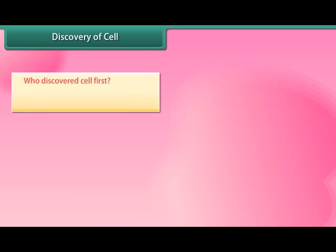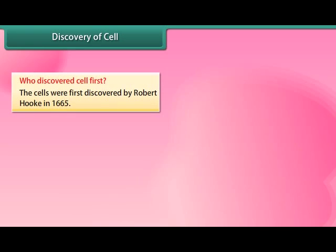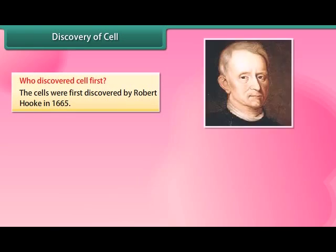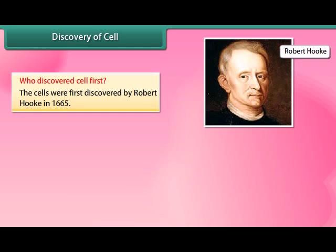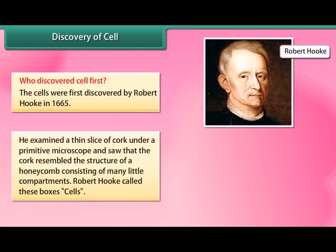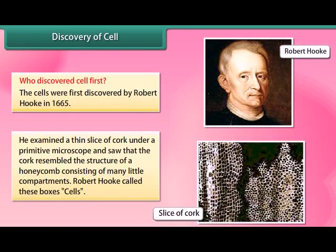Who discovered the cell first? Cells were first discovered by Robert Hooke in 1665. He examined a thin slice of cork under a primitive microscope and saw that it resembled the structure of a honeycomb consisting of many little compartments. Robert Hooke called these boxes 'cells'.